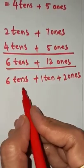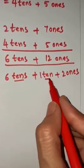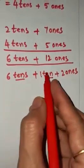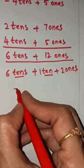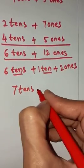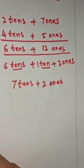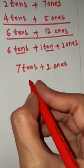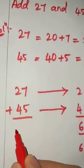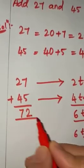We are adding the tens now. 6 plus 1 is 7 — 7 tens plus 2 ones, that is nothing but 72. So 27 and 45 is nothing but 72.